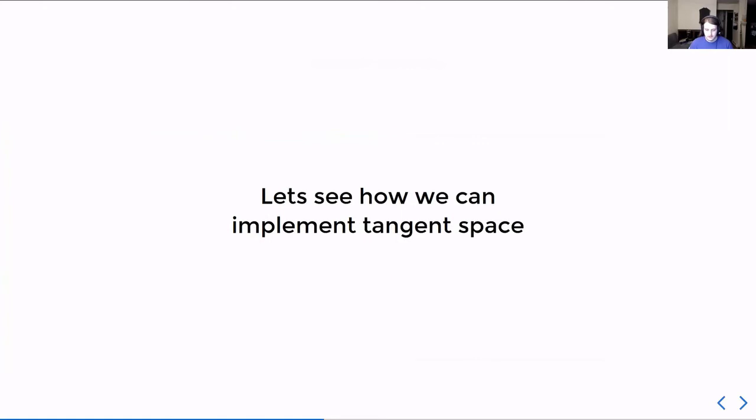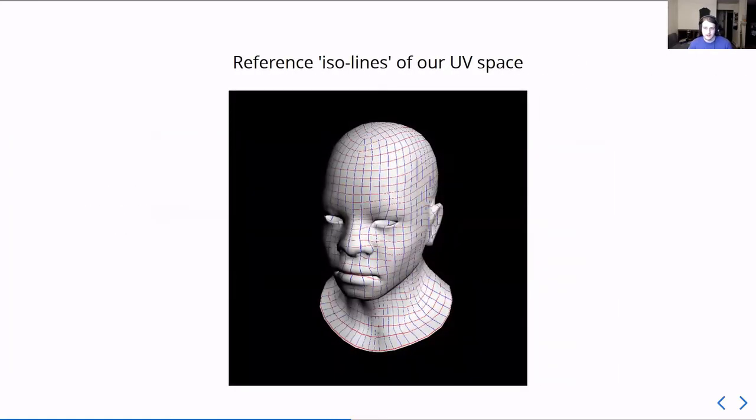So, how do we implement it? Well, we first need to have some visualization of what the UV space underlying the mesh is. And that's what these red and blue lines are. They're the quote-unquote texel lines. If you drew a grid on the normal map, the texture map, the UV spaces would be applied to it.